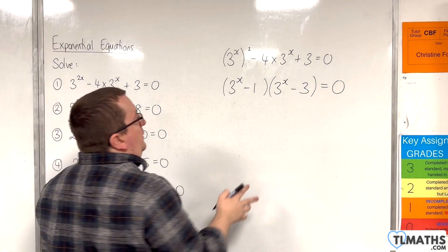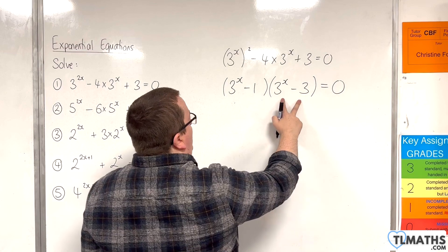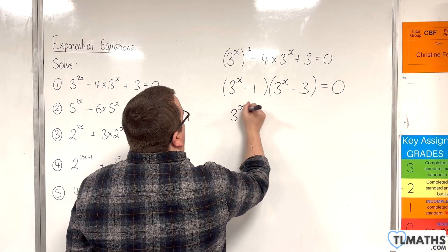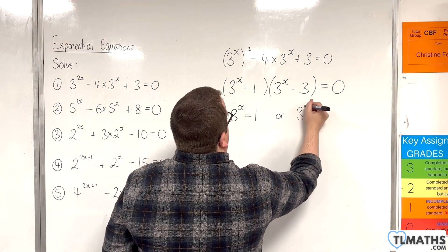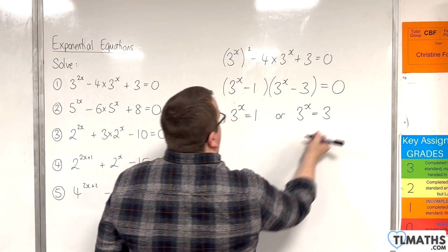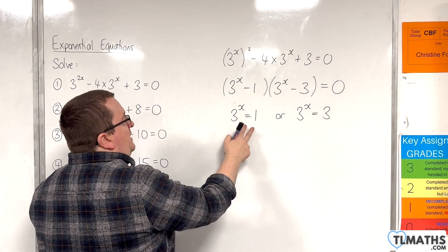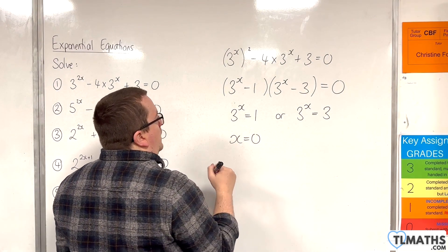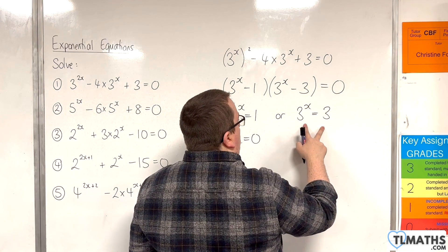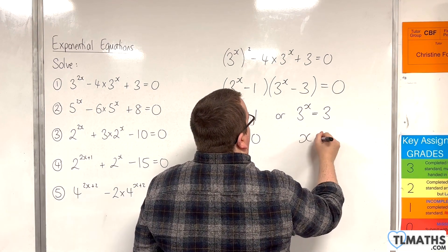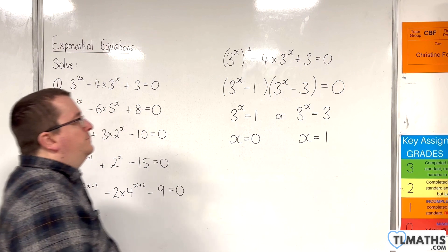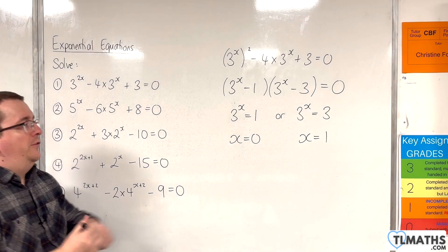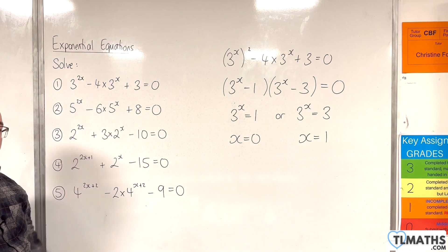Either bracket being 0 means 3 to the x equals 1, or 3 to the x equals 3. If 3 to the x is equal to 1, then x equals 0. And if 3 to the x is equal to 3, then x equals 1. Those are the two solutions that solve the original equation.